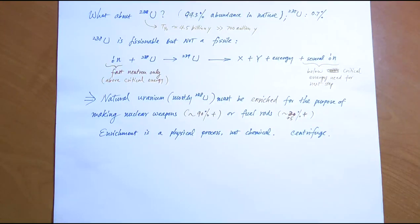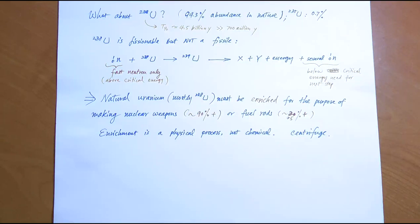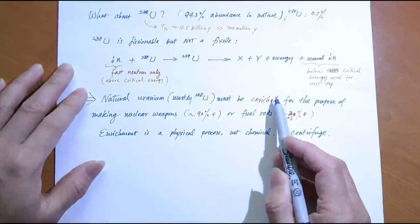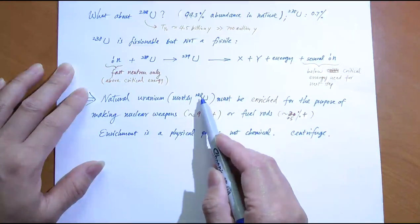This is bad news for the nuclear industry because U-238 is far more abundant. We have to take natural uranium — which is mostly U-238 — and enrich it, converting it to mostly U-235, which is the fissile. It's also good news for nuclear safety: if U-238 were directly usable as bomb material, its relative abundance would make it far too accessible. The enrichment process extracts U-235 from mostly-U-238 natural uranium.